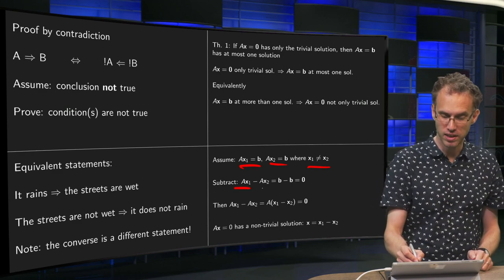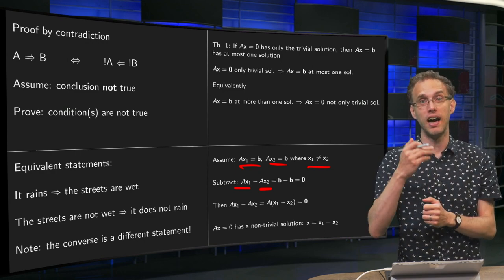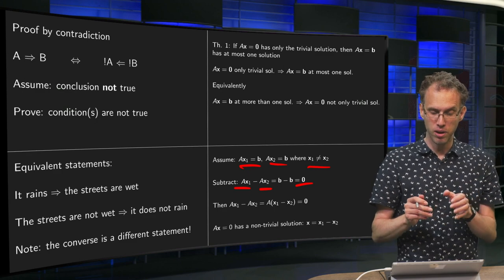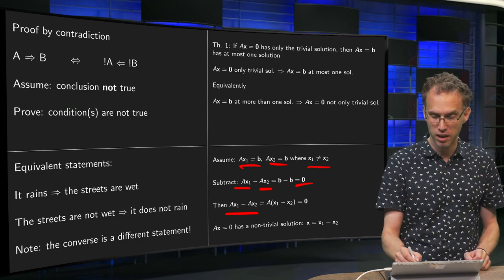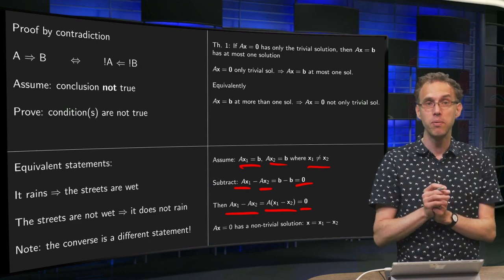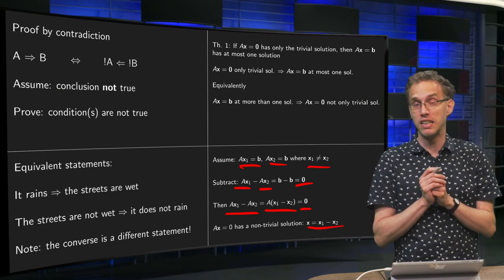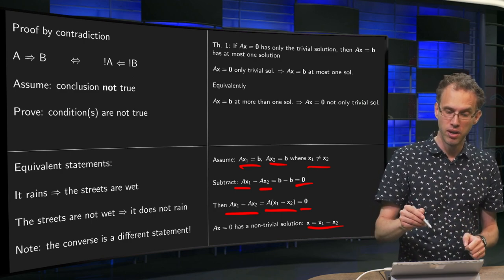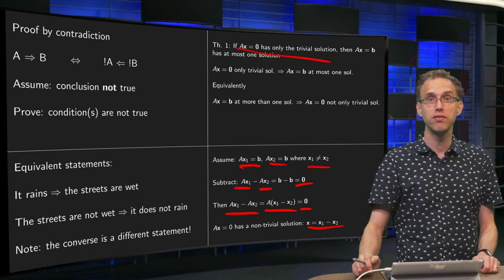We subtract them, so we get Ax₁ minus Ax₂ equals b minus b. Because Ax₁ was b and Ax₂ was also equal to b, so we get b minus b equals 0. Then we have Ax₁ minus Ax₂; you can factor out the A to get A times (x₁ minus x₂) equals the zero vector. But now Ax=0 has a non-trivial solution, namely x = x₁ minus x₂ is a non-trivial solution of Ax=0.